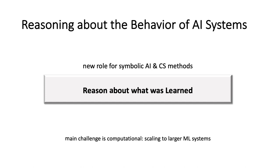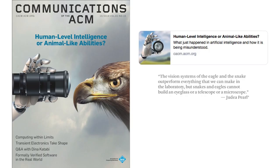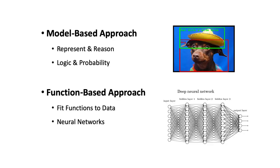Now I'm switching gears. Instead of saying 'give me the system you built, I'll abstract its behavior and reason about it,' we're getting into something more ambitious: how do we build systems that are easier to reason about? This requires a distinction between model-based versus function-based (model-free) approaches to AI. Traditionally, to solve certain problems, we build models, represent knowledge, and reason. But now we've found out that we can do a lot of that by simply creating mappings or functions - given enough labeled data, fit a function.